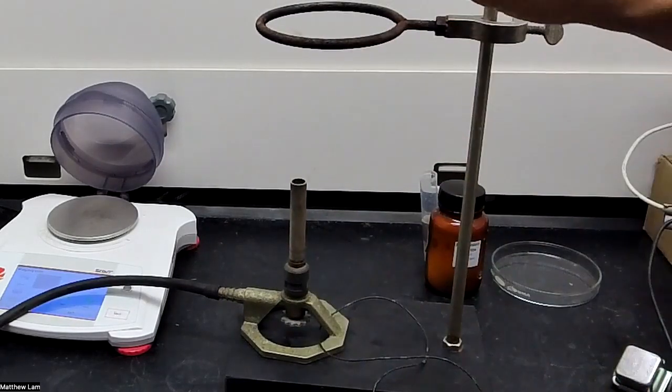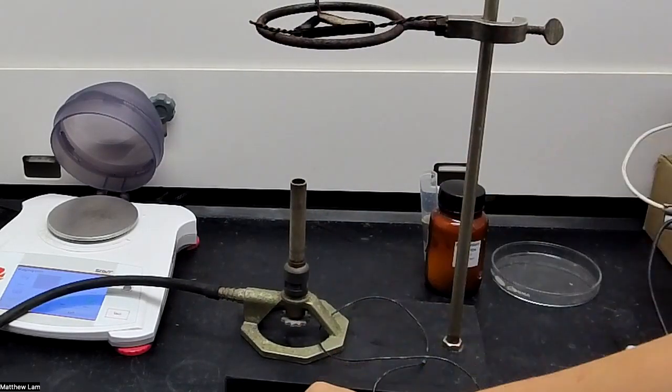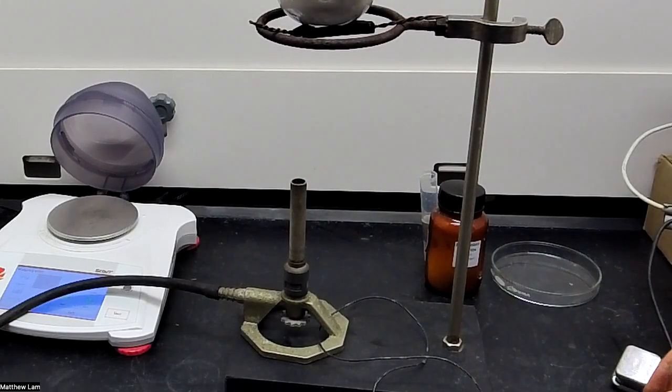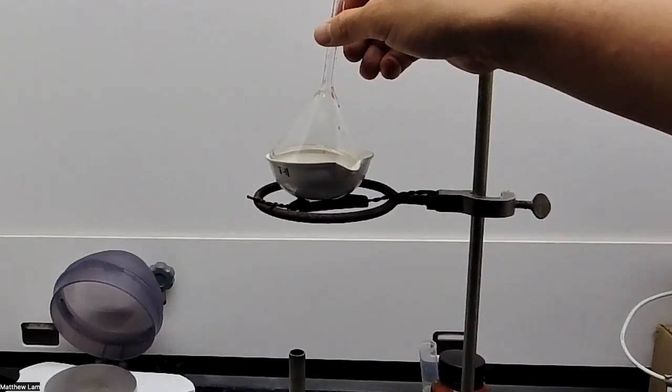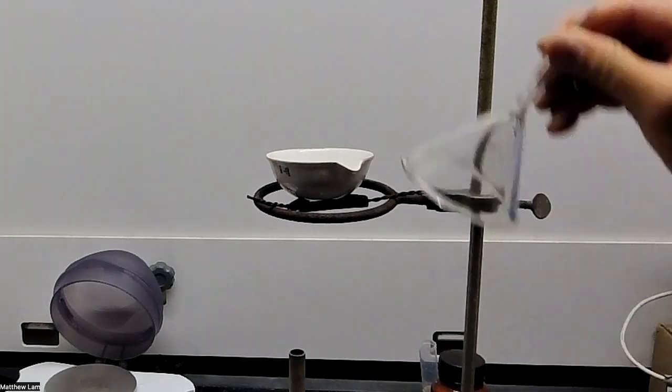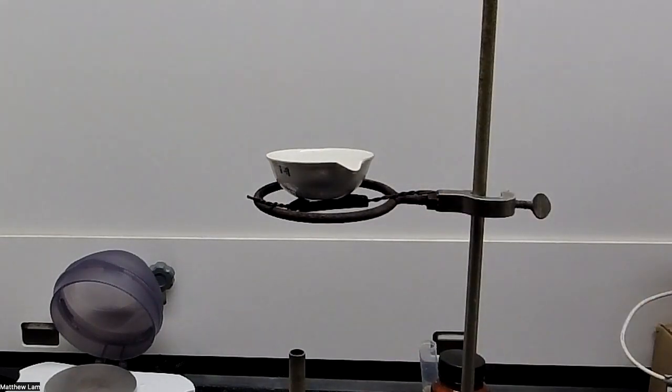We'll put our triangle wire, our evaporating dish. We'll have a funnel right on top of here to catch ammonium chloride when it sublimes. We're not going to put it out because it's going to fall and break. I will be adding a clamp to it to hold it in place.